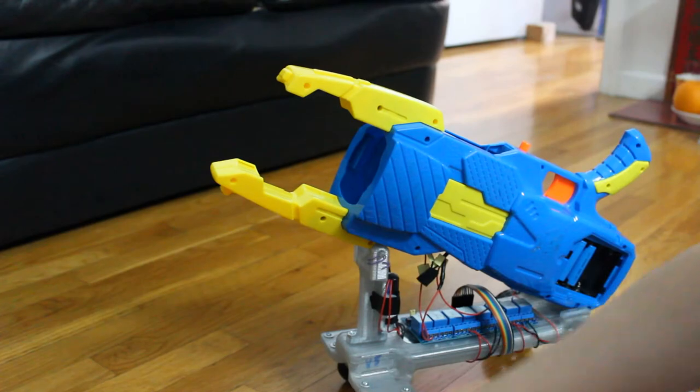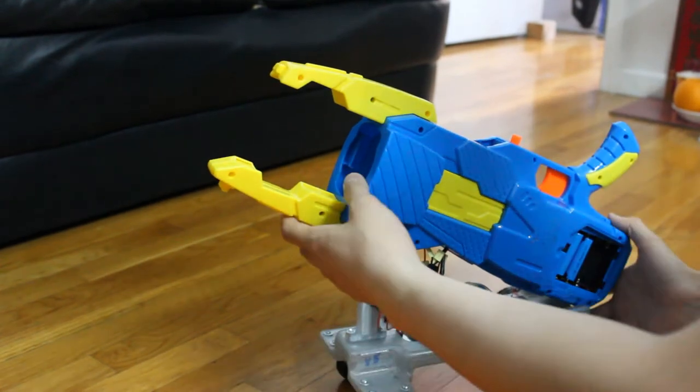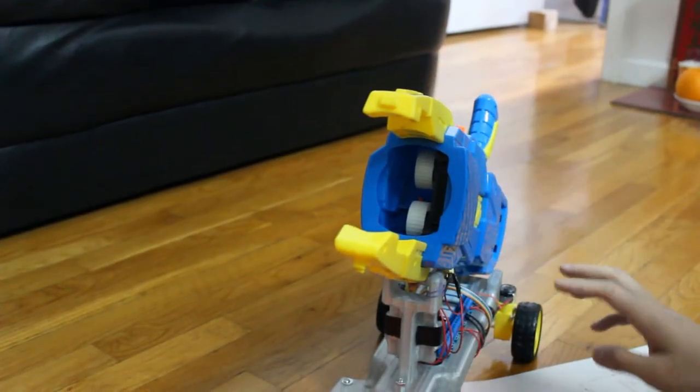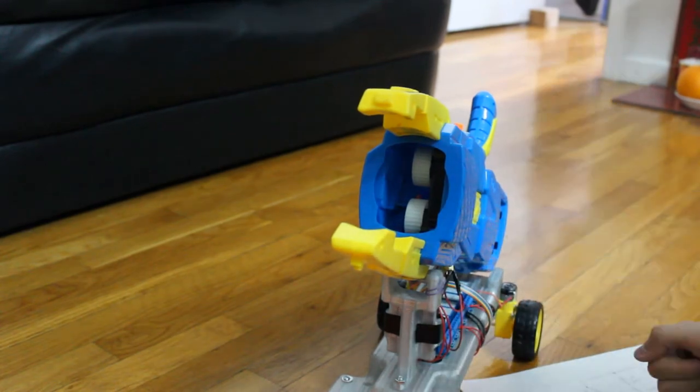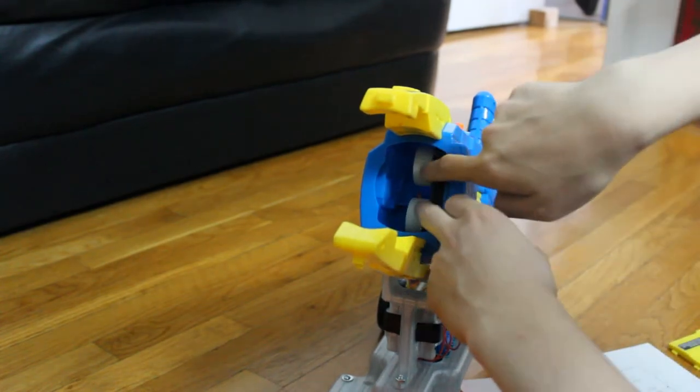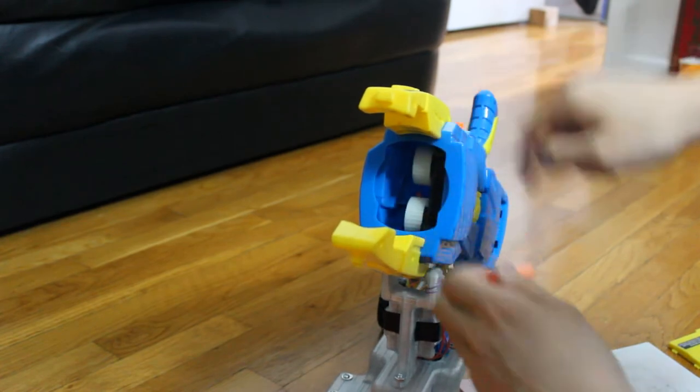Now, this thing has been modified, so right now it has three motors: two motors for the flywheels and one motor for the plunger that pushes the dart into the flywheels. The flywheels are these two white wheels you can see here.